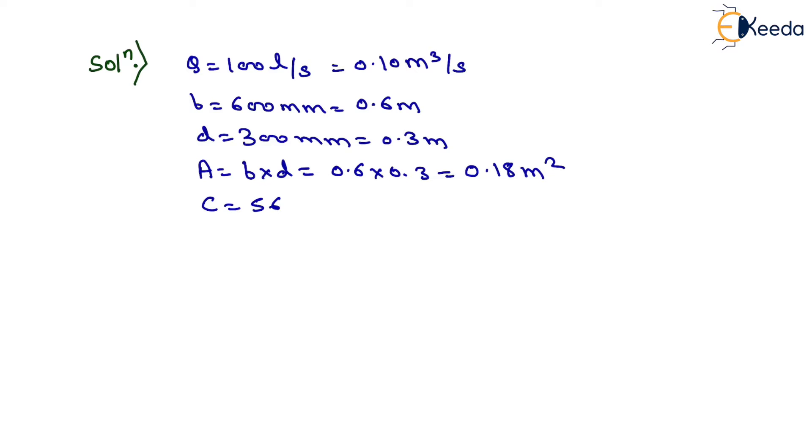For the calculation of I, first we need to calculate the hydraulic mean depth, which equals A by P. The value of A is 0.18 meter square, and P equals B plus 2D.